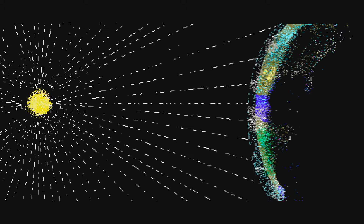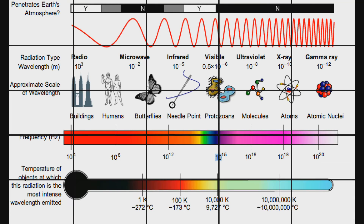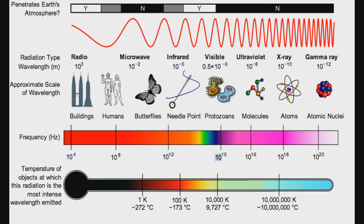In the electromagnetic spectrum there are two things within it: charged particles and electromagnetic waves. Electromagnetic waves are basically an electric field and a magnetic field compiled together to form an electromagnetic field, thus creating a wave. In this diagram we can see the seven regions of the electromagnetic spectrum and the order in which they are represented.